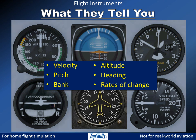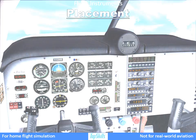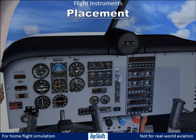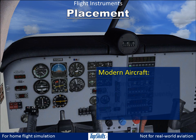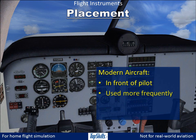They might look different among various aircraft, but they all report the same information. In modern aircraft, flight instruments are directly in front of the pilot because they are used more frequently during flight than any other instruments. They are in various places in aircraft from early periods, but they function the same way.